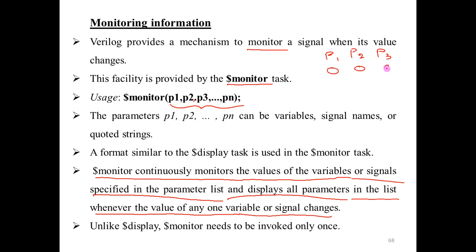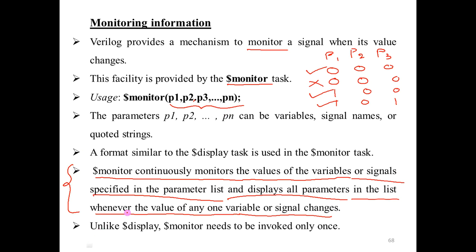For example, monitoring p1, p2, p3: `$monitor(p1, p2, p3)`. Initially with value 000 it displays. If next it is still 000 — no change — it does not display again, because the sensitivity list checks for changes in p1, p2, or p3. When one variable changes, say to 100, it displays 100. Any change in the parameter list causes `$monitor` to display that instance on the console.